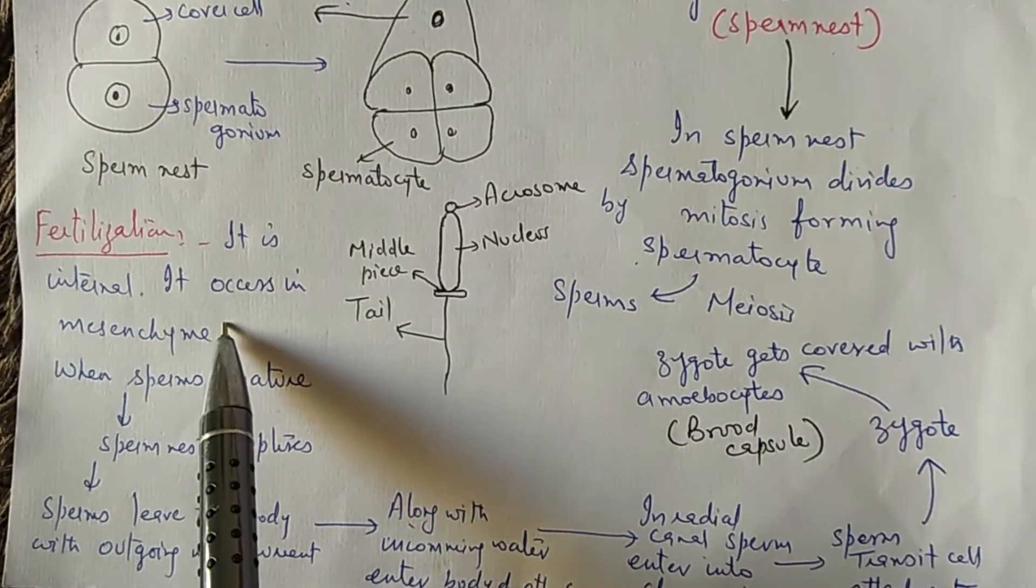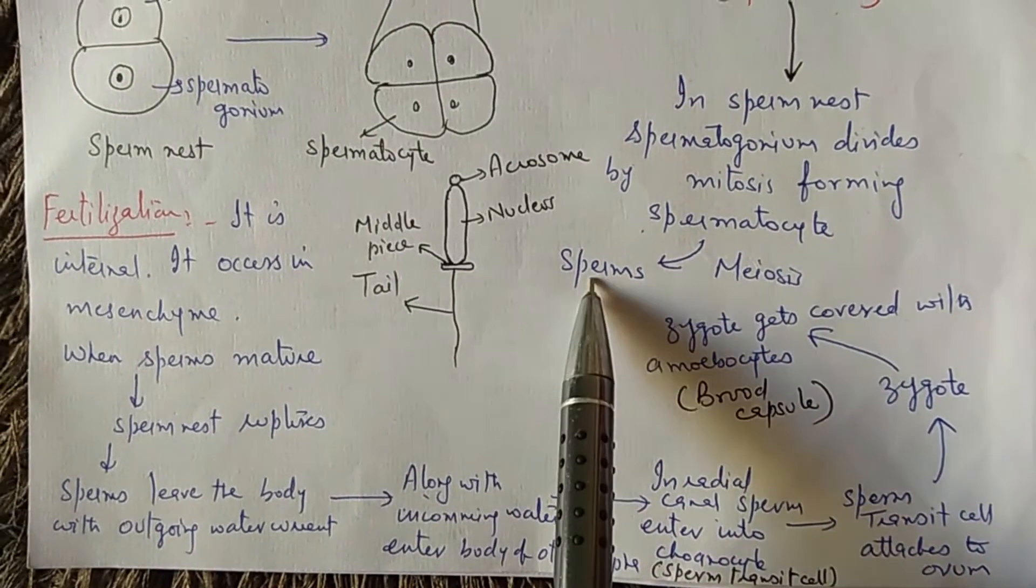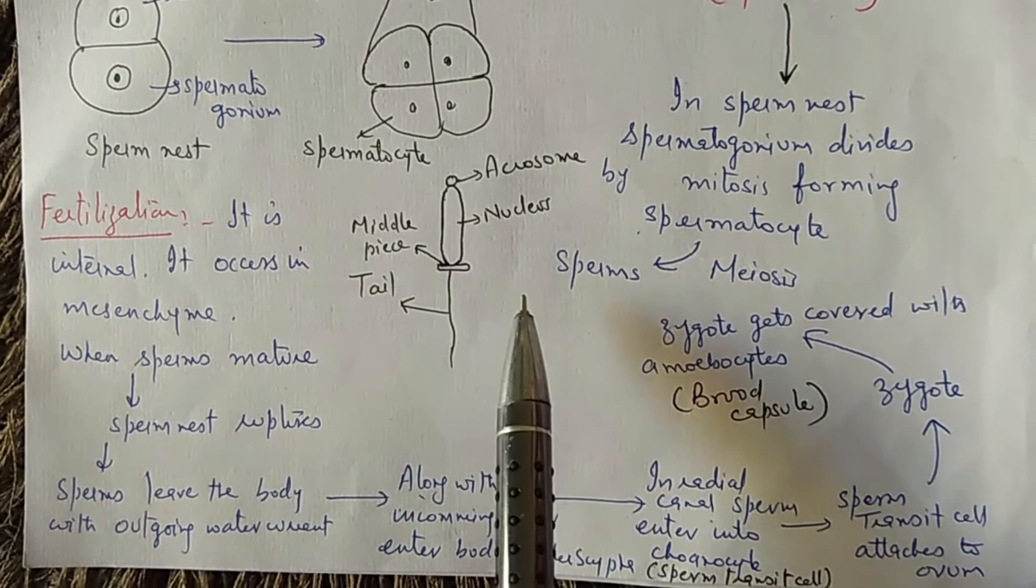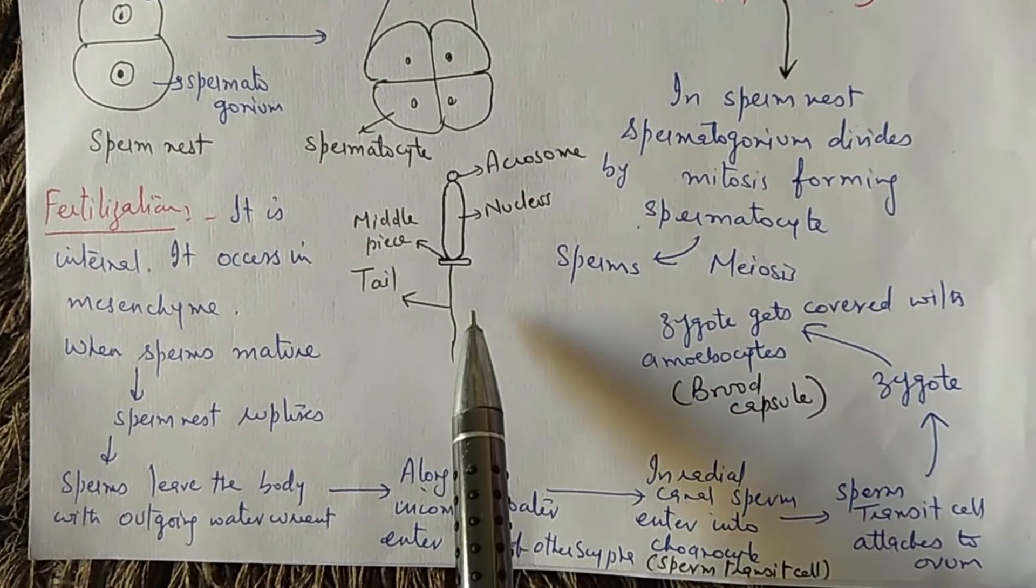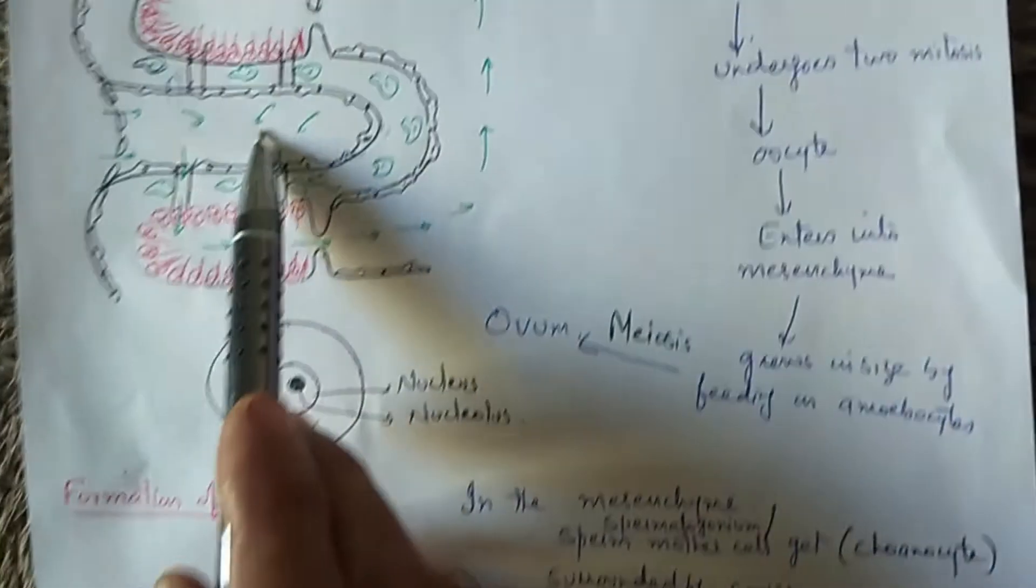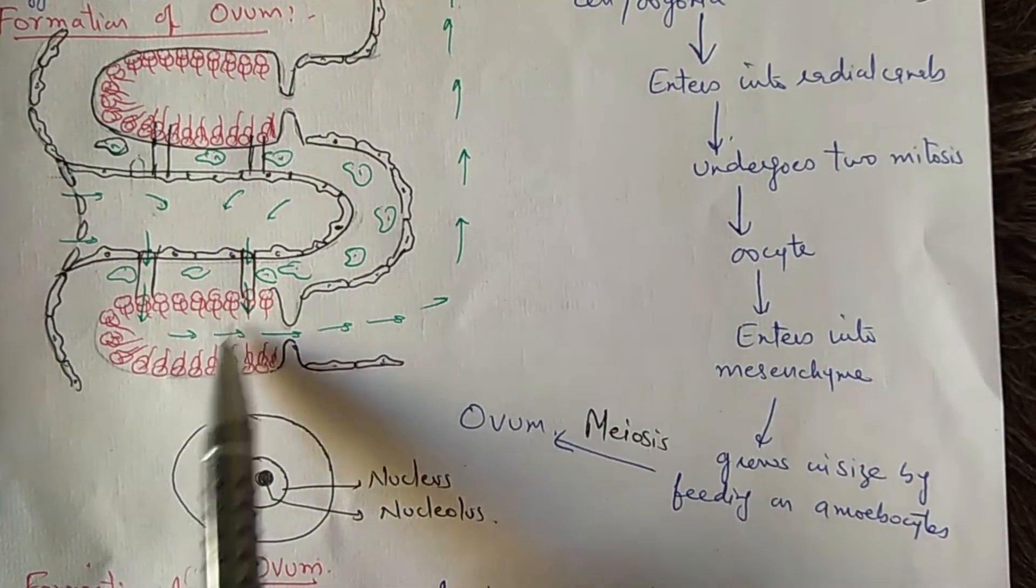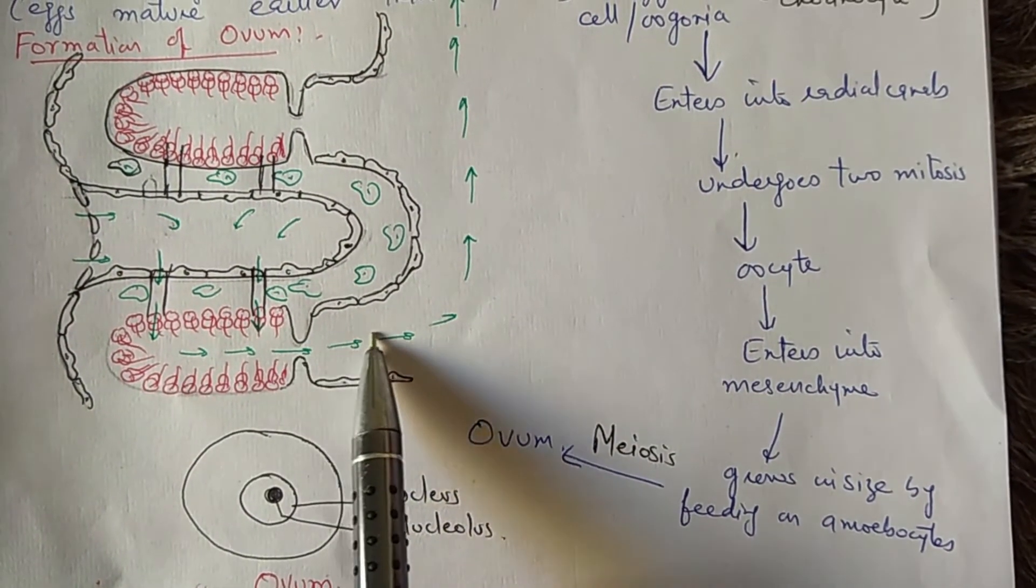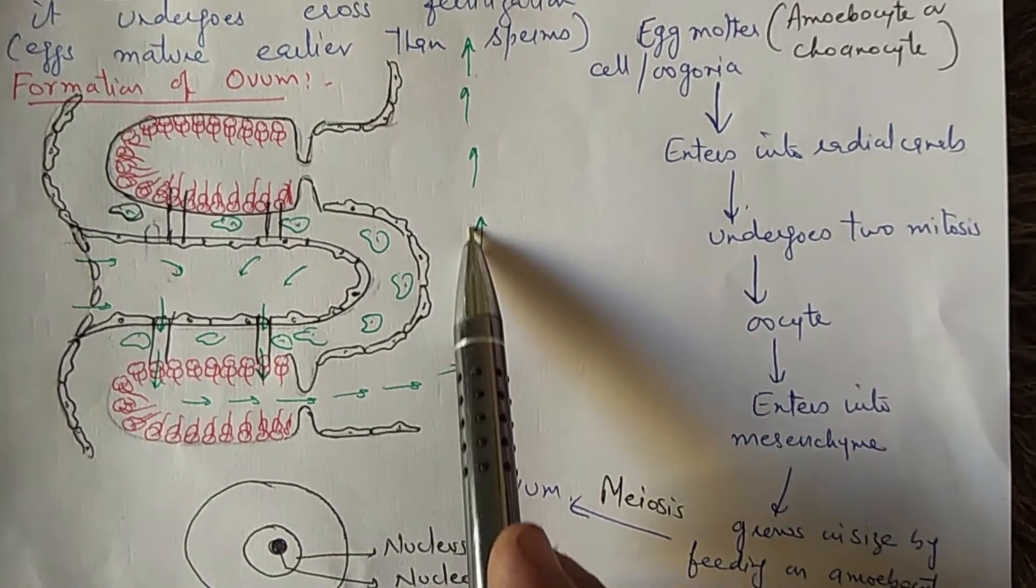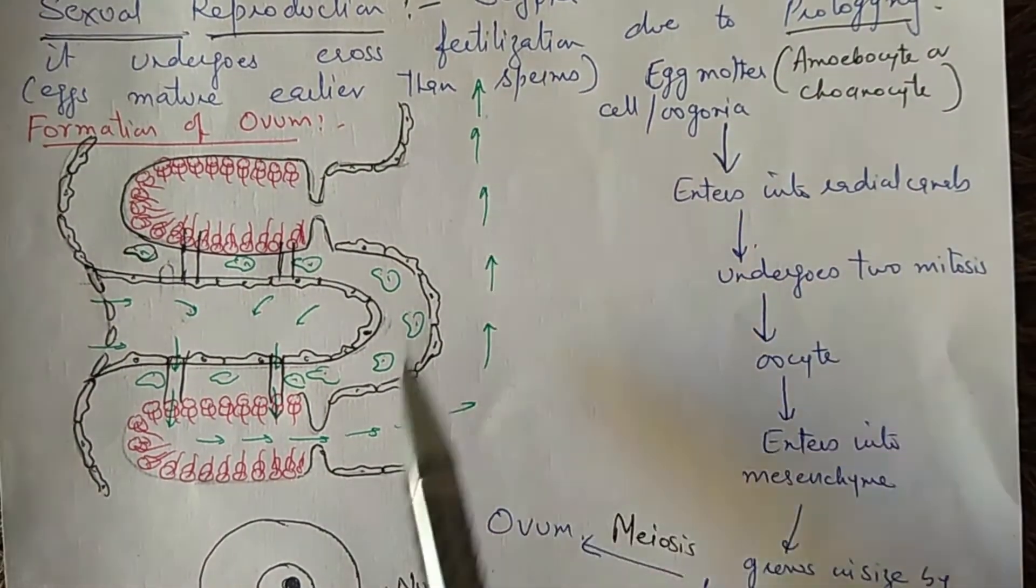Now, ultimately, how does fertilization occur? The egg was lying in the mesenchyme. The sperm nest ruptures. As the sperm nest ruptures, sperms are released into the radial canals. From radial canals through apopyle, excurrent canal, spongocoel, and osculum, these sperms leave the parent scypha.